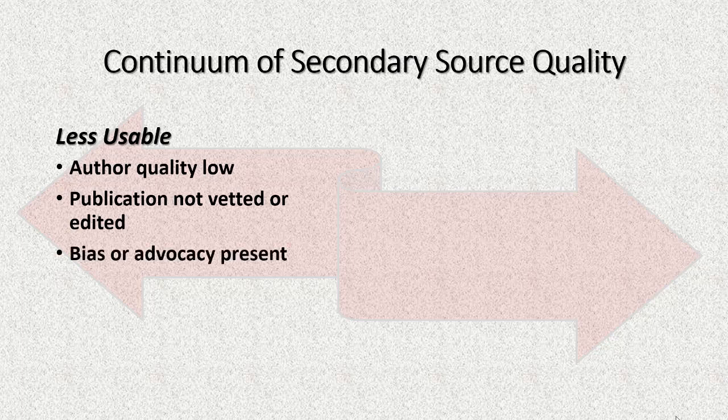Bias or advocacy might be present in unusable works. Point of view is one thing, but some authors hide an agenda under their credentials. The point of view is so one-sided that they might skew their evidence, they might not make arguments in good faith, they might ignore contrary evidence or interpretations, or they might use propaganda techniques to convince readers to adopt a way of thinking or an action agenda. Bias and advocacy are the antithesis of sound scholarship. They taint everything they touch.